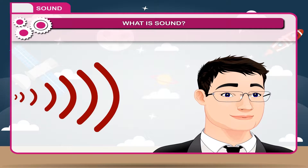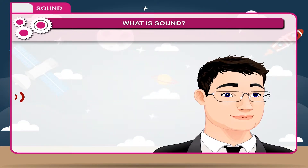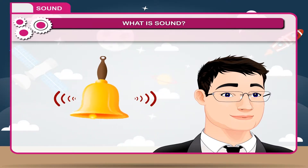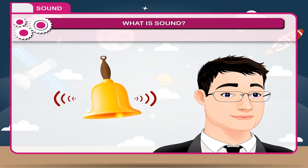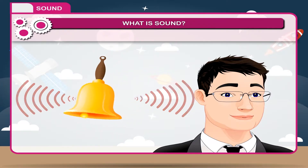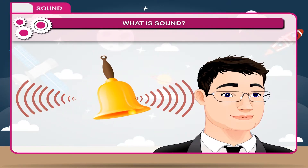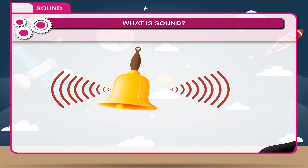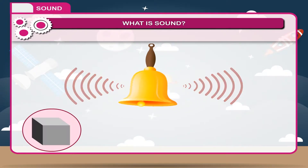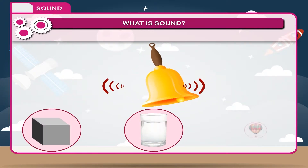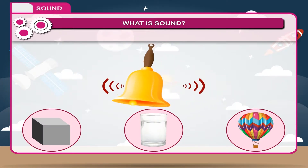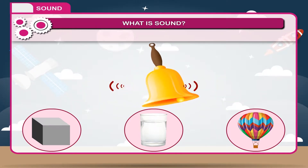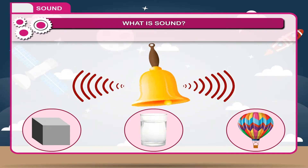Sound is a kind of sensation received by our ears and perceived by our brain. It is a form of energy which makes us hear. Sound is produced by any vibrating material and felt by us only when these vibrations reach our ears. Sound travels in solids, liquids, and gases, but not in vacuum. Thus, sound needs a material medium for propagation.